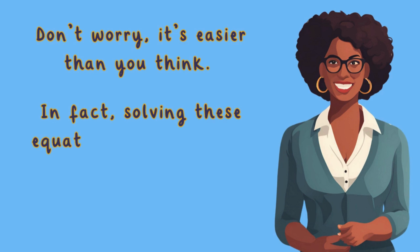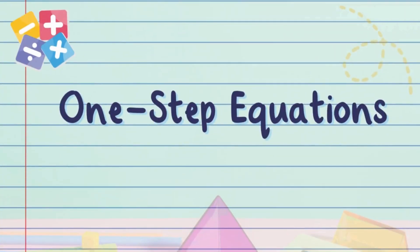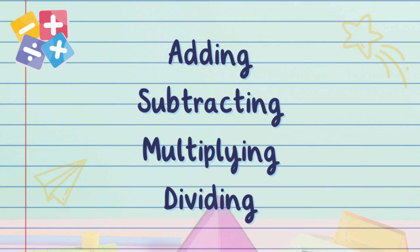In fact, solving these equations is as simple as taking one step. What is a one-step equation? Okay, let's break it down. A one-step equation is an equation where you only need to perform one operation—like adding, subtracting, multiplying, or dividing—to solve for a variable.